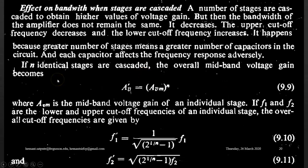Next, we will learn the effect of bandwidth when stages are cascaded. A number of stages are cascaded to obtain higher values of voltage gain, but then the bandwidth of the amplifier does not remain the same. It decreases. The upper cutoff frequency decreases and the lower cutoff frequency increases.